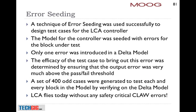Another technique we have used is error seeding. This helped us during the LCA control law program where we injected deliberate faults into the system — we called it a delta model. The delta model had a single error injected into it and we ran test cases to find that error. We did something similar for Boeing programs: we inject one error into a model, generate a test case, and if the test case can find this error, we know it is a very good test case. It is a laborious process — you have to do it for all blocks in your model — but it is an excellent way of generating and validating test cases.